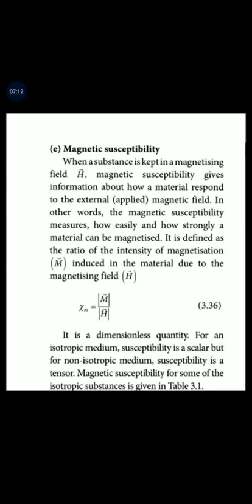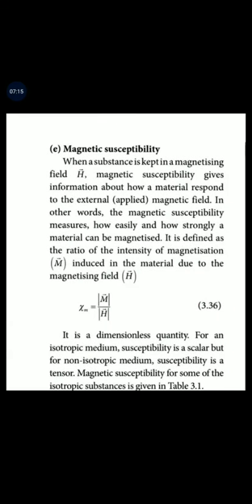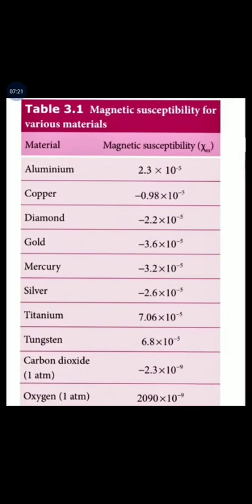Susceptibility equals M-vector divided by H-vector, and it is dimensionless. For materials like aluminum and copper, the susceptibility value is of the order of 10 to the power minus 5, and for oxygen it is approximately 2090 times 10 to the power minus 9, which is a very low value.